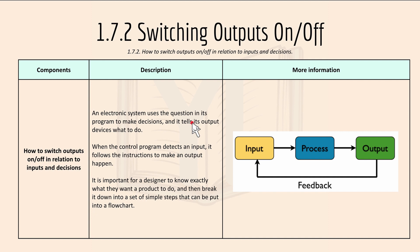An electronic system uses a question in its program to make decisions, and it tells its output devices what to do. When the control program detects an input, it follows the instructions to make an output happen.